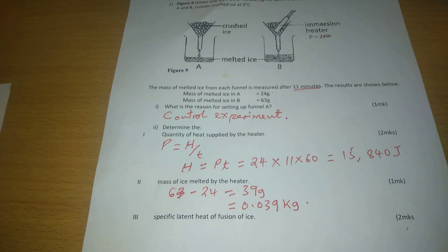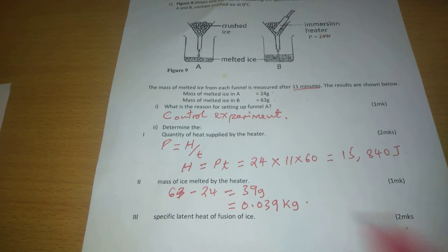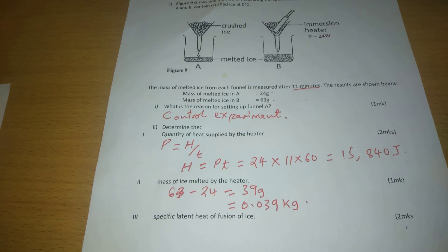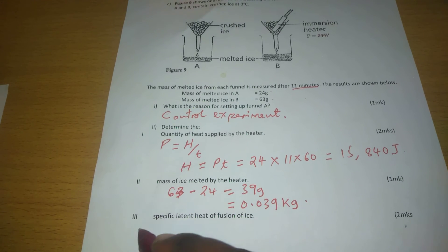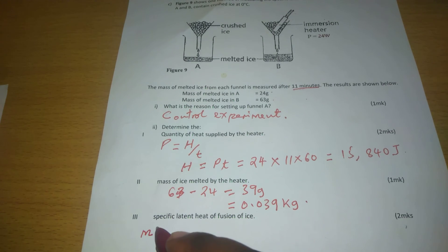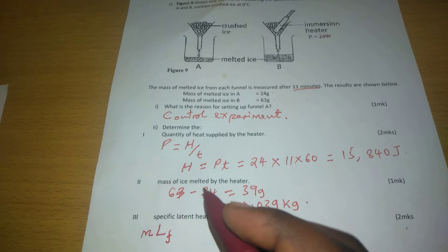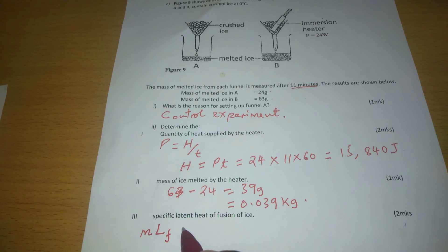So now for us to calculate specific latent heat of fusion of ice, what we should agree is assuming that there are no heat losses to the surrounding, the amount of heat energy supplied by this immersion heater is the same amount of heat energy absorbed by ice so that it may melt. The heat absorbed by ice to melt is called latent heat of fusion and it is calculated by the mass of ice times specific latent heat of fusion of ice.